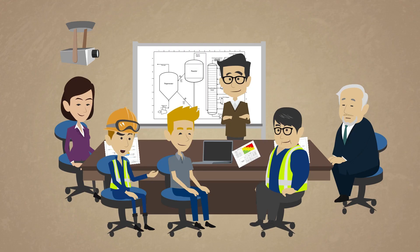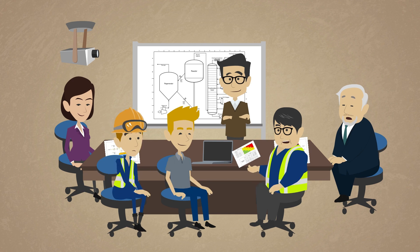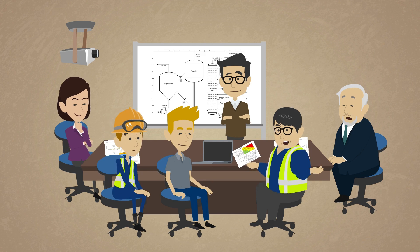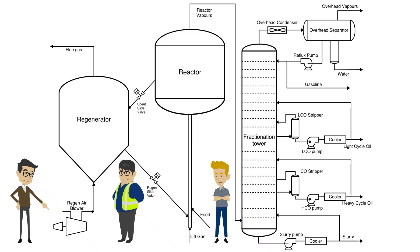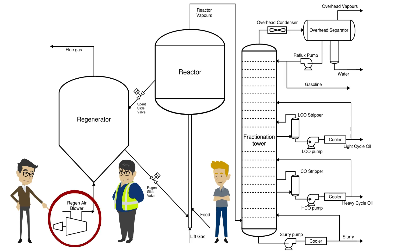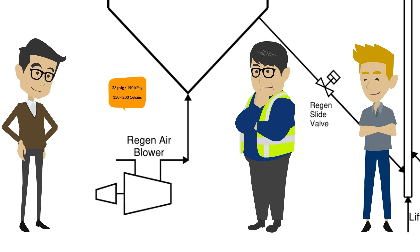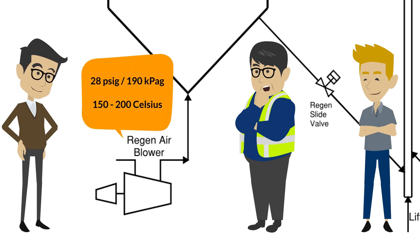Why do we need to maintain the differential pressure? It's required to keep the catalyst circulating in the system and to prevent misdirecting oxygen from the regenerator into the reactor. Let's have a look at the combustion air supply to the regenerator. The blower operates on back pressure from the regenerator, which operates around 28 psig, or 190 kPaG.